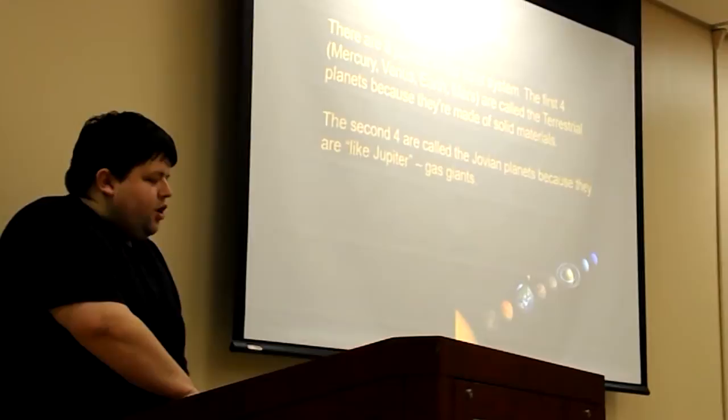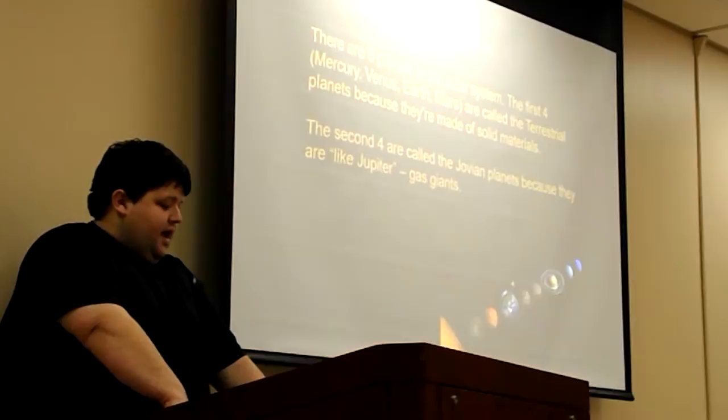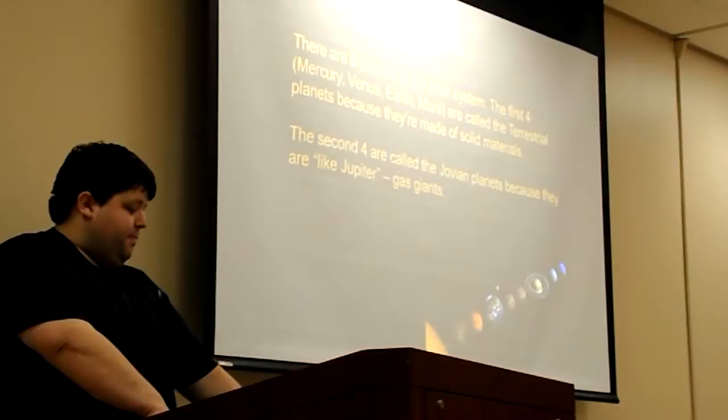So there are eight planets right now in the solar system. Four are called terrestrial because they're made mostly of rock. And then four are called Jovian, because they are very much like Jupiter. They're gas giants. They're made of mostly gas.